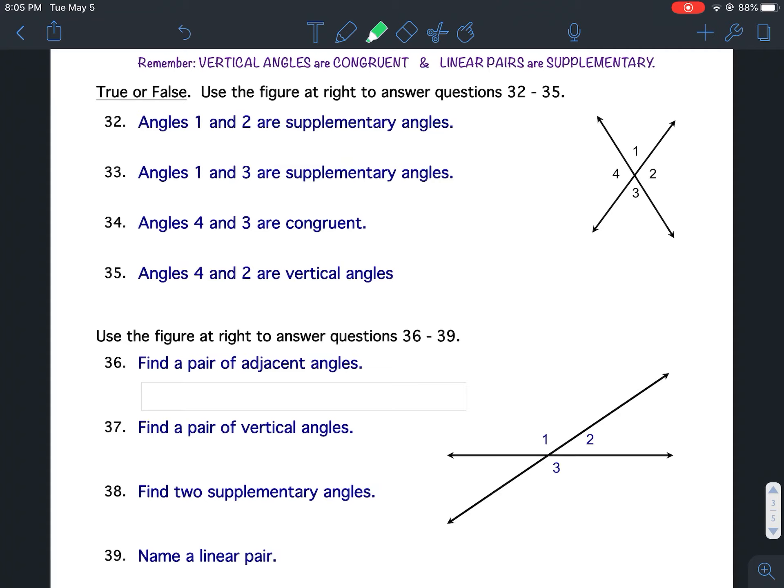And we'll say one and four make a linear pair. Remember, linear pairs are side by side. They form two angles that are side by side. They should form a straight line. So you'll pause your video now and answer true or false, and you can put just a T or an F, that's fine, for questions 32 through 35.